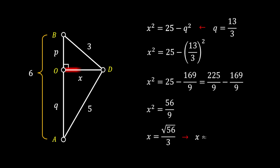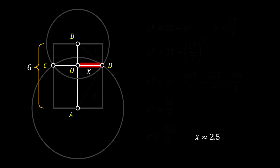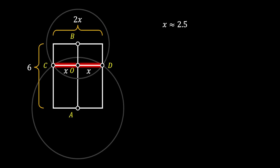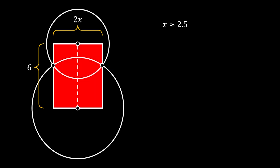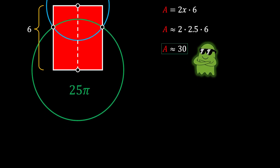Now that we have the value of x, we unzoom our triangle and return to the previous image. We know that line AB is a line of symmetry, which means segments OD and OC must have the same length, so OC must also equal x. Therefore, since our rectangle has the length of CD, this length must be equal to 2x. The area of our red rectangle is the product of length and height: 2x times 6. Substituting the value of x, we finally get that the area of our red rectangle is approximately 30 square units.